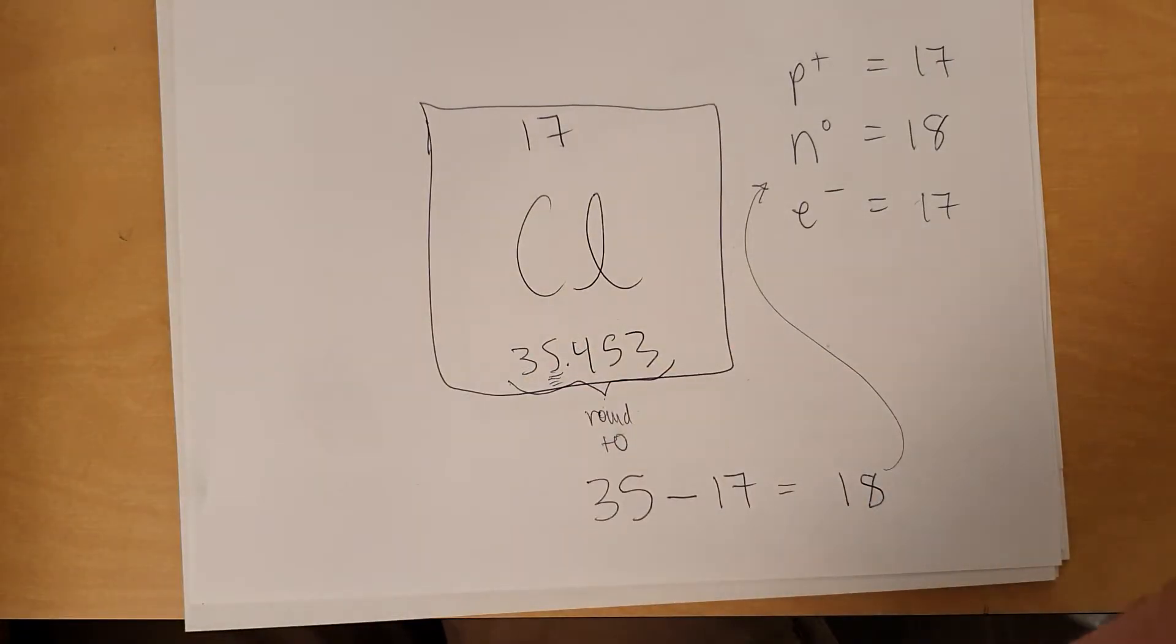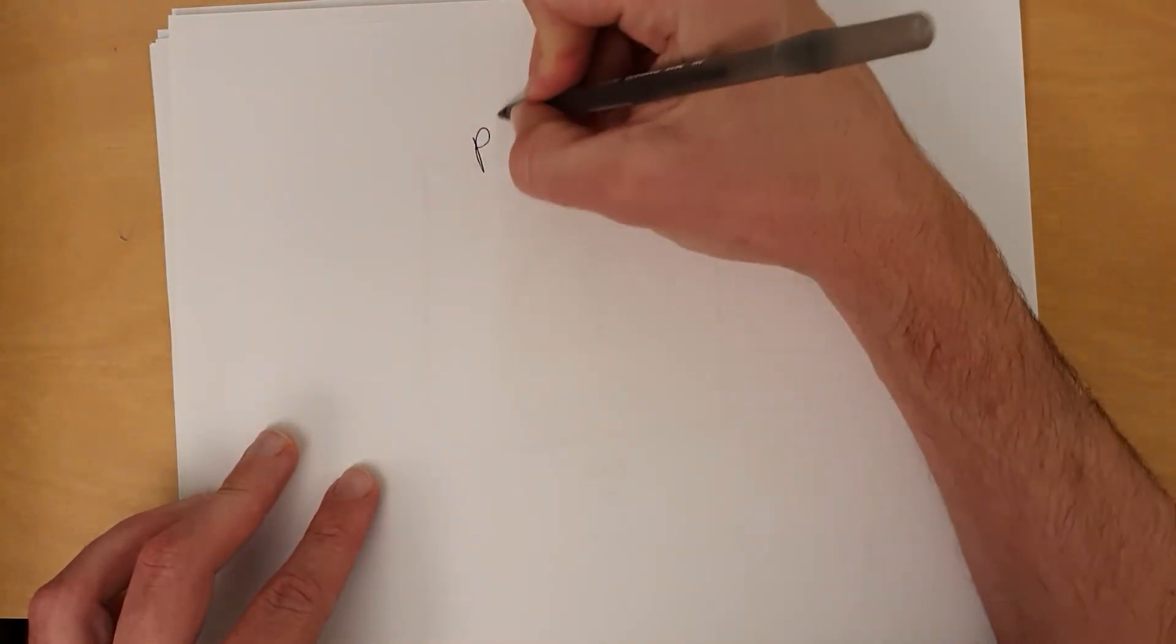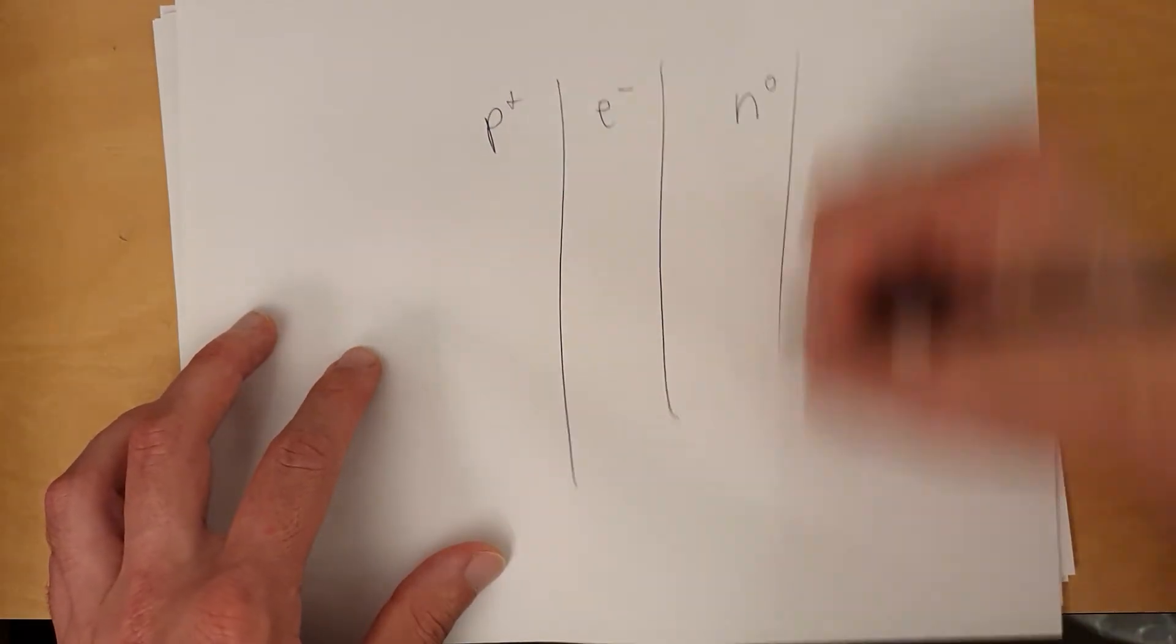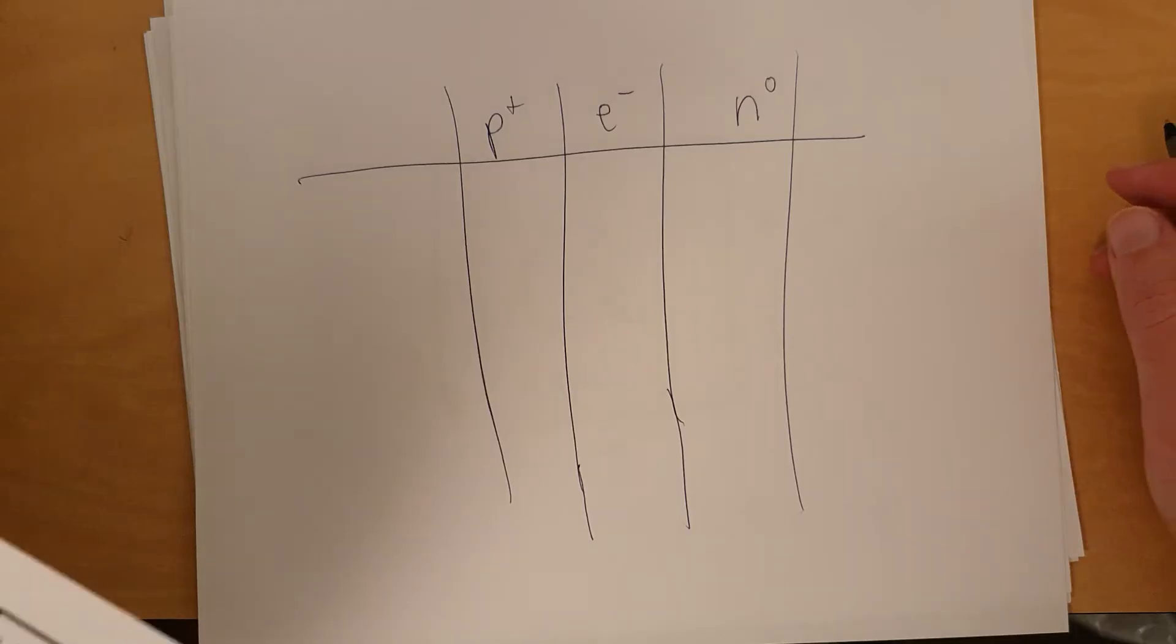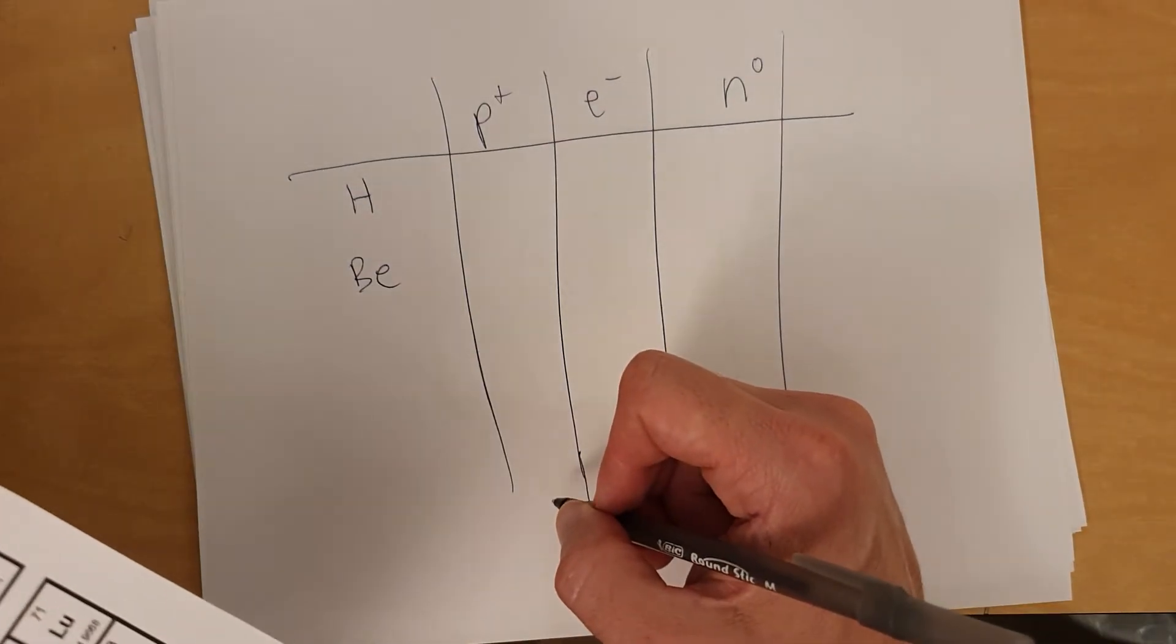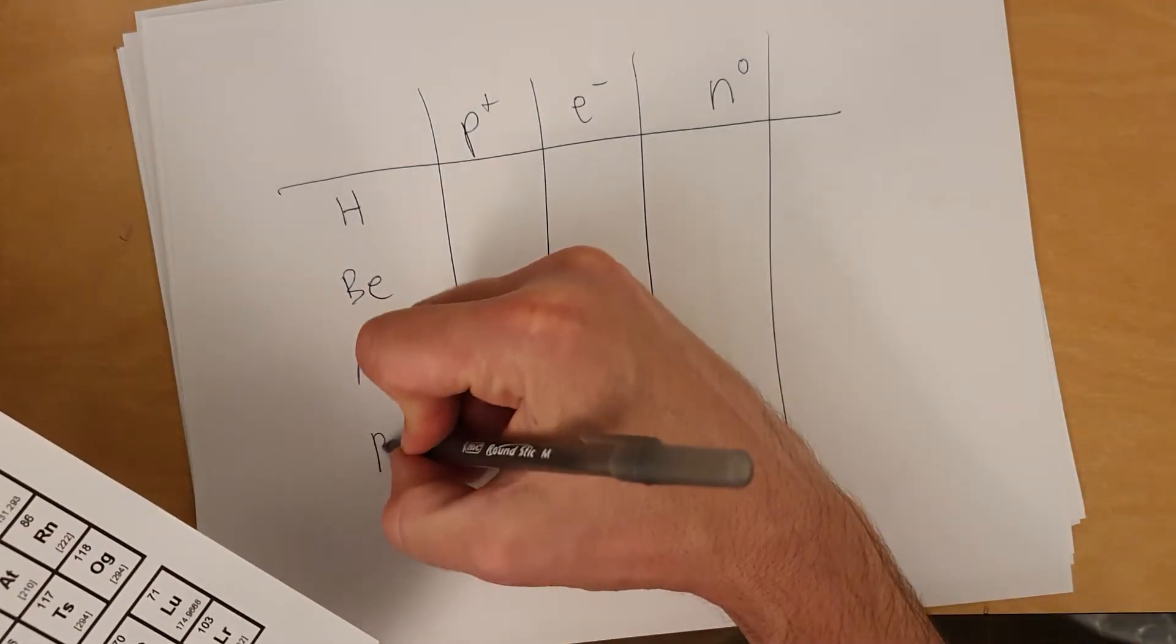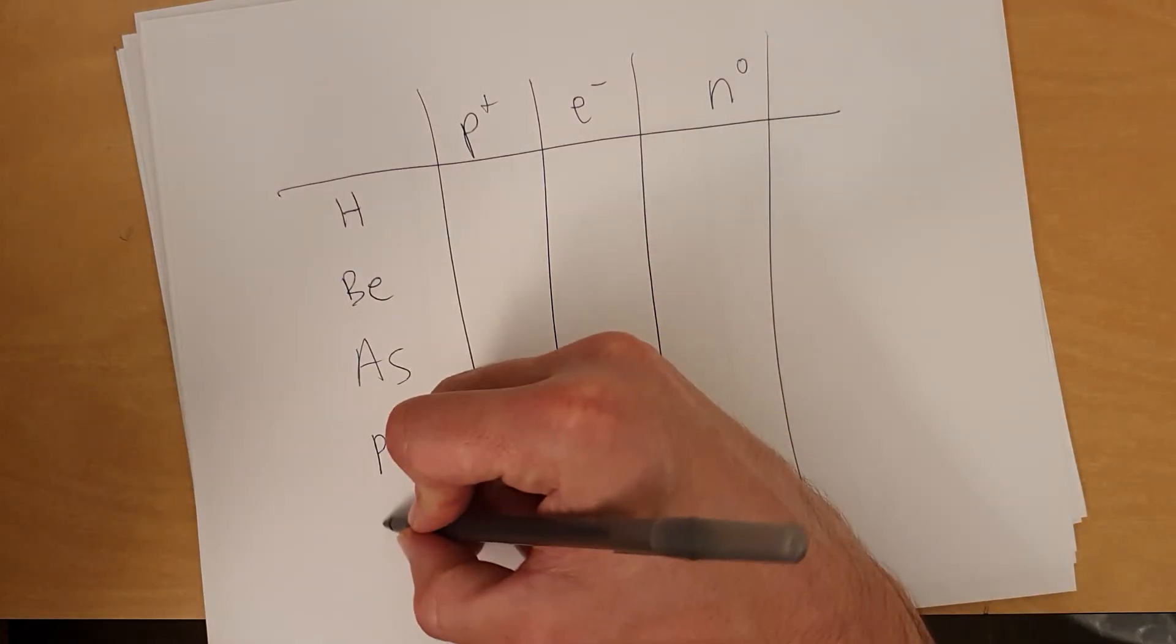Here, try out a few. And get a blank piece of paper. Okay, get a periodic table in front of you, and look at these elements. I'd like you to find the number of protons, electrons, and neutrons for each of the following things. I'll make a little chart here. Let's do hydrogen, beryllium, arsenic, lead, and let's see, the heaviest natural element, uranium.